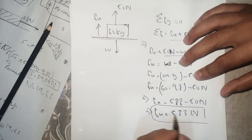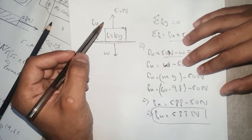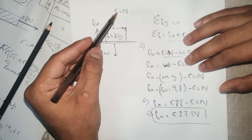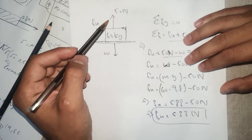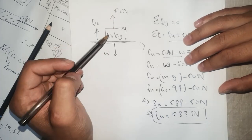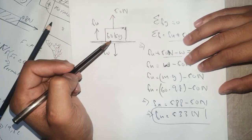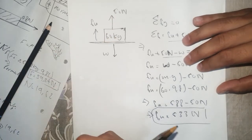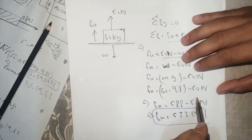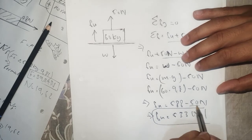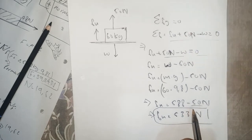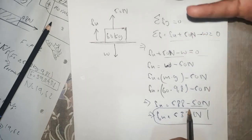It means the tension of 50 Newtons is kind of pulling — kind of decreasing the normal force.